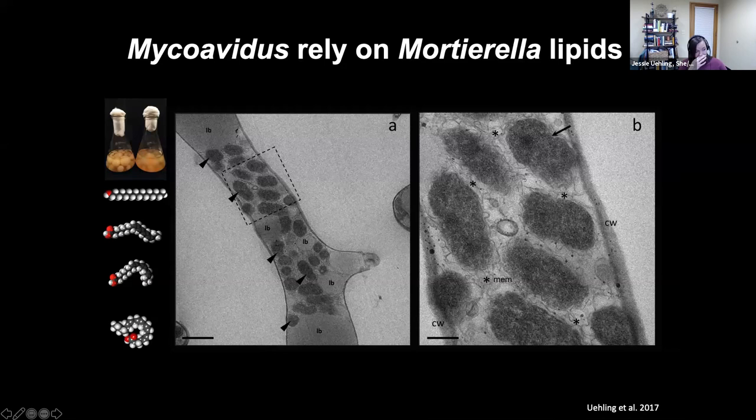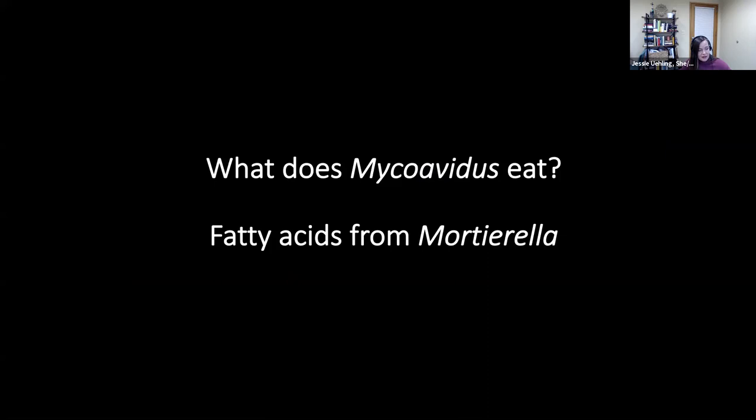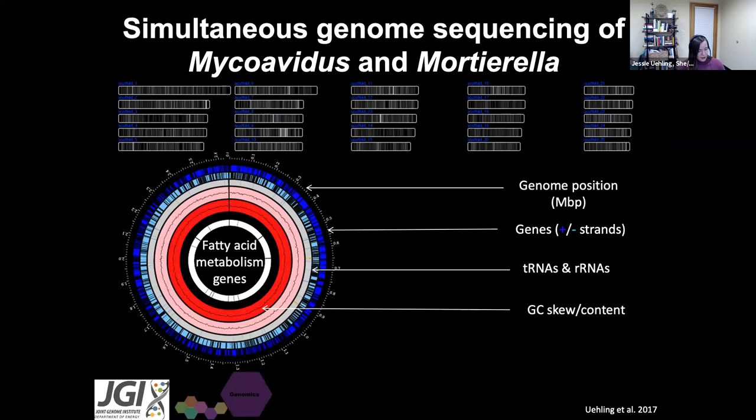Takeaway number two: what does Mycoavidus eat? It eats fatty acids from its fungal host Mortierella. We can see genetic evidence of this interaction in the genomes of these two microbes. When we grow Mortierella in the lab on plates, we're also growing the bacteria inside of the cells. When you extract DNA from the whole system, you can actually use that DNA to assemble the genomes of both microbes simultaneously. So you get back fungal contigs — pieces of fungal genomes — and also bacterial DNA to build the bacterial genome.